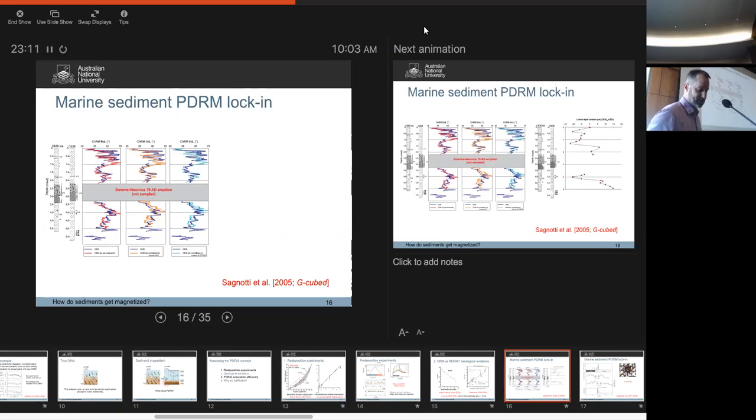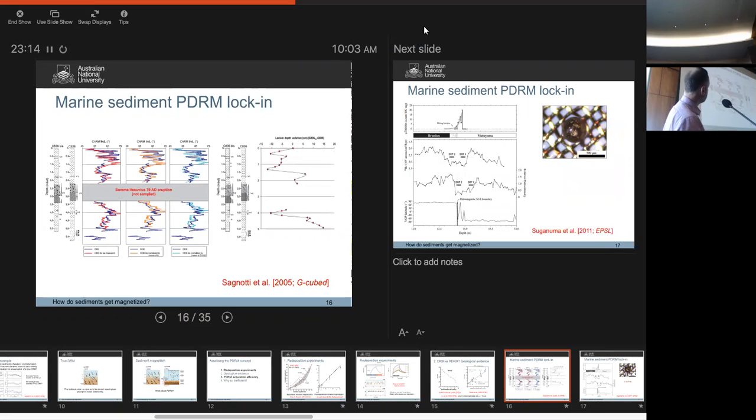What Signotti et al. interpreted this to be is an indication of blocking depth variations. What they find is that deeper in the record where the blue leads the yellow, you get a positive difference of up to about 15 centimeters. And in the upper part, you get a negative difference. So they would argue that that's evidence of lock-in depth of a PDRM.